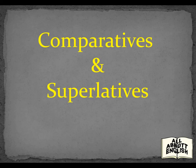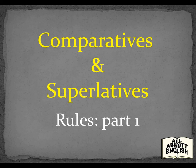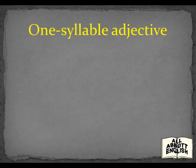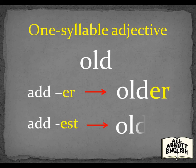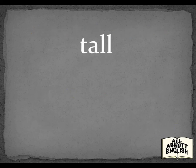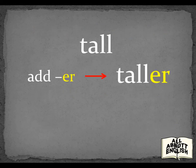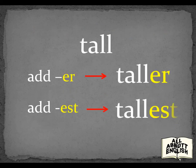Comparatives and Superlatives Rules Part 1. One Syllable Adjective: Add ER for Comparatives, Add EST for Superlatives. Old — Older — Oldest. Tall — Taller — Tallest.